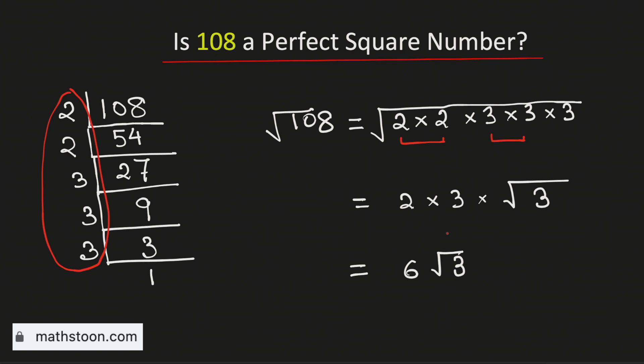Now as this is not an integer, therefore we say that 108 is not a perfect square number.